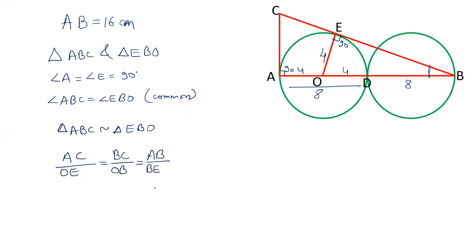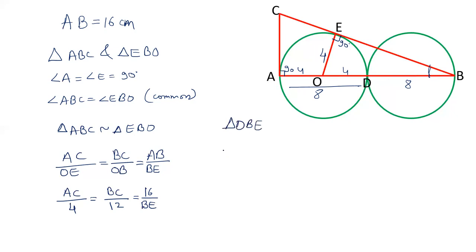Let's write down the known values. We need to calculate AC. OE is 4 — the radius of the circle. BC we don't know, so we write BC. OB equals 4 plus 8, which is 12. AB is 16. BE we don't know yet, so we write BE. But in triangle OBE we can calculate BE using the Pythagorean theorem: OB² = OE² + BE².